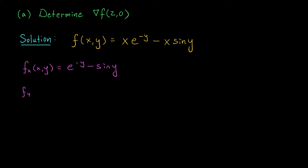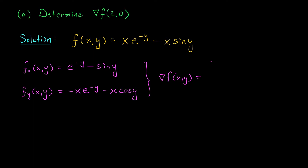The partial derivative with respect to y at (x,y) is given by: the derivative of xe^(-y) gives -xe^(-y), and the derivative of the second term gives -x·cos(y). We have our partial derivatives. To get our gradient, we place them into a vector. Our gradient vector del f at (x,y) has entries e^(-y) - sin(y) and -xe^(-y) - x·cos(y).